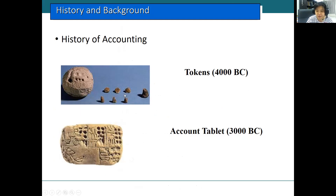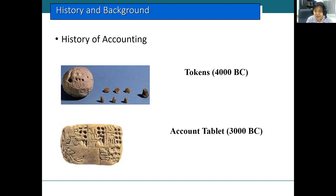Tokens seem to have been used as evidence of transactions. People used tokens to make figures of cows or sheep when they exchanged them with each other. About one thousand years later, people used account tablets, and these account tablets summarized inventory and transactions that had been made.